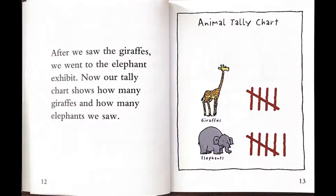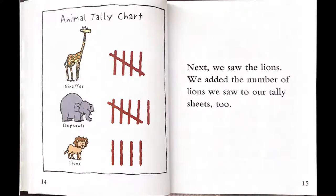After we saw the giraffes, we went to the elephant exhibit. Now our tally chart shows how many giraffes and how many elephants we saw. Next, we saw the lions. We added the number of lions we saw to our tally sheets too.